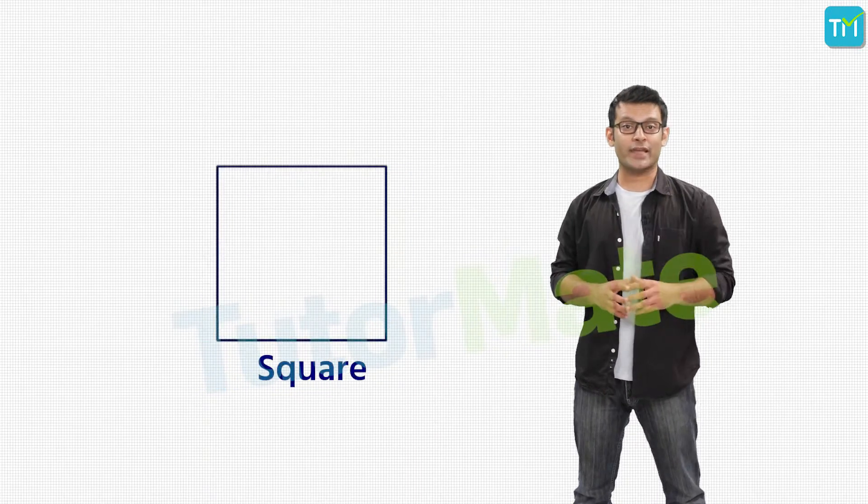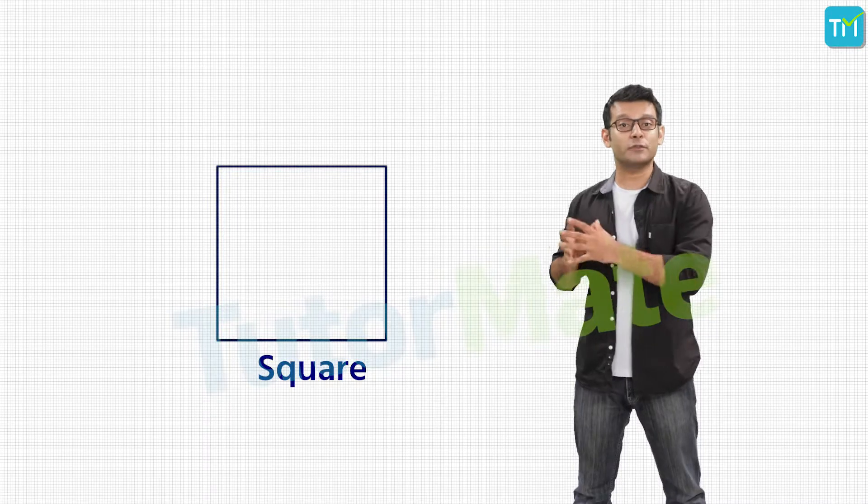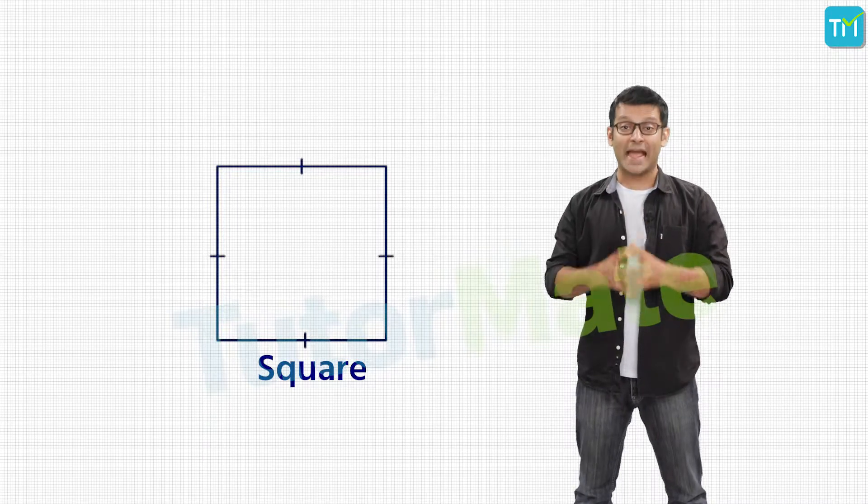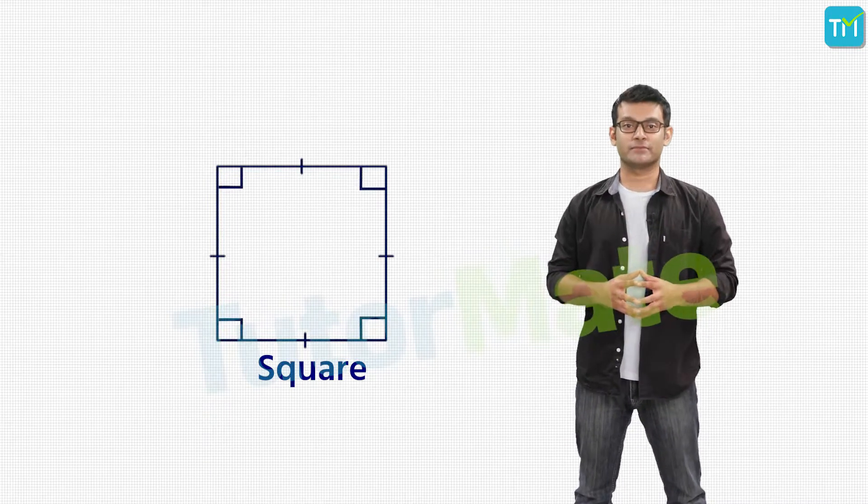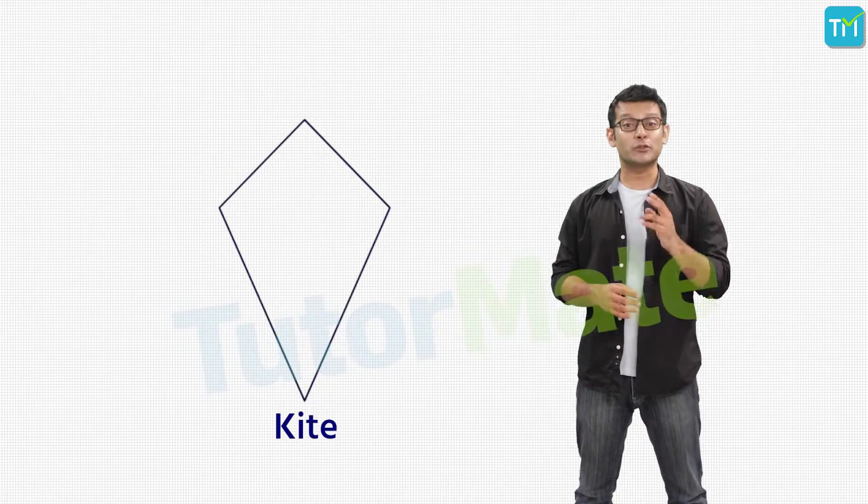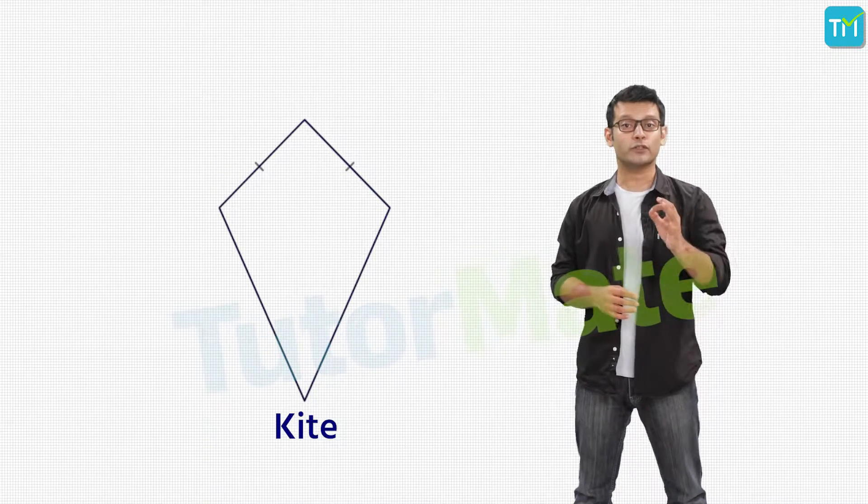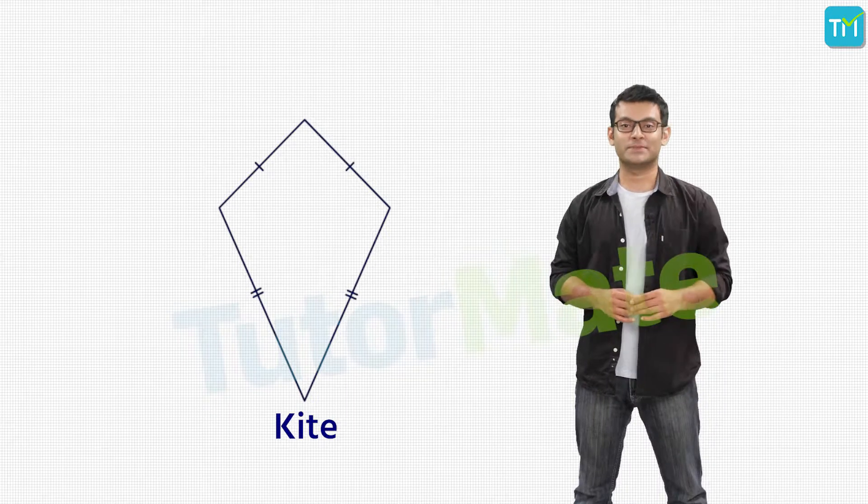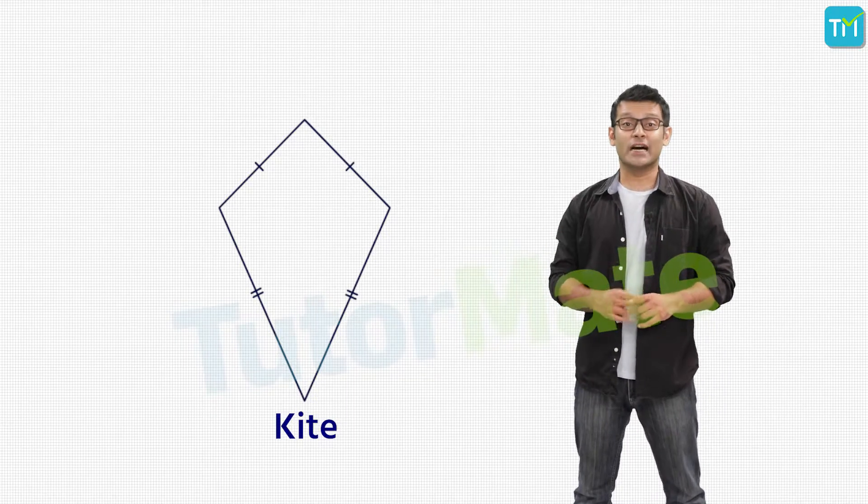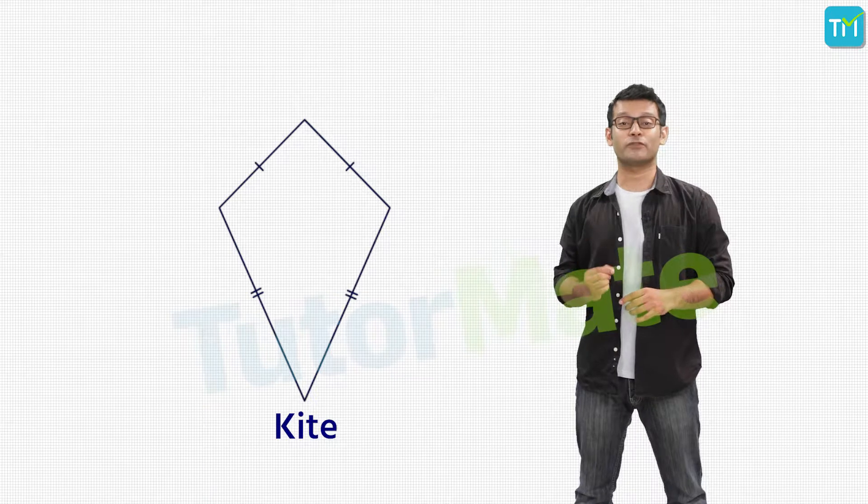Now, for the fourth type, that is a square, we have all sides of the parallelogram which are equal and at right angles. Finally, we have the kite, where two pairs of adjacent sides of the quadrilateral are equal. And as the name goes, a kite resembles the shape of a kite.